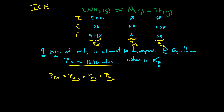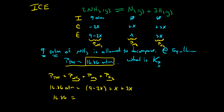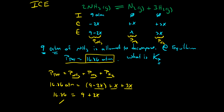We know the total pressure is 16.86 atmospheres, the pressure of ammonia is nine minus two X, the pressure of nitrogen is X, and the pressure of hydrogen is three X. We're left with a single variable X, and we're able to solve for it. Simplifying: 16.86 equals nine plus (negative two X plus X plus three X), which gives 16.86 equals nine plus two X. Solving for X gives X equals 3.93 atmospheres.